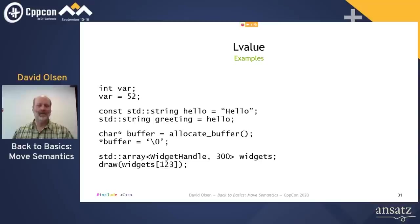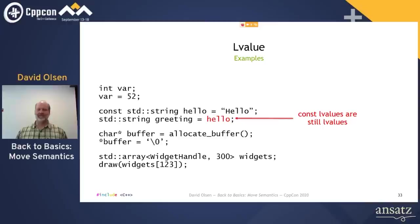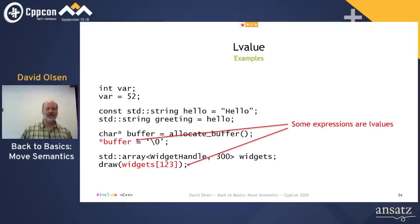Here are four examples of L-values. In the first one, the use of the variable var is obviously an L-value — it's on the left-hand side of an assignment, it has a name, and we can take its address. The const variable hello can't be assigned to, but it still has a name and we can take its address, so it is still an L-value. L-values don't always have names — the final two L-values are expressions.